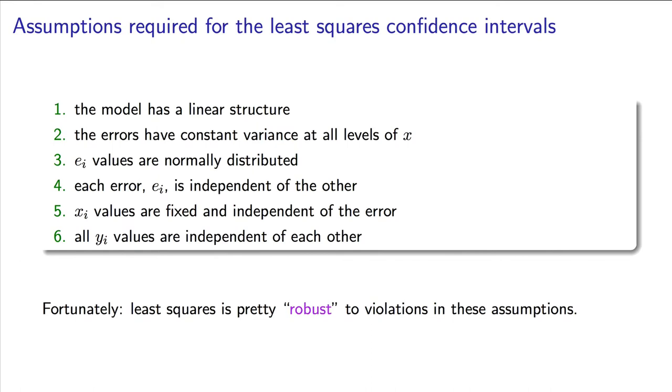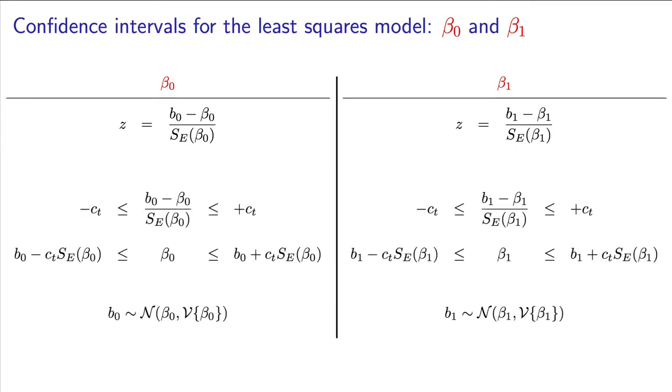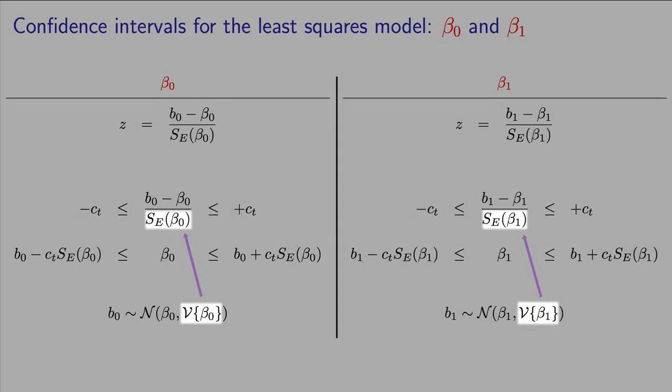To derive these confidence intervals, we follow a process like we did in the prior module, where we first create a z value for b0 and b1 respectively. Then we will unpack that z value into a confidence interval. The only problem that we face is that we need a denominator value here for the z value.